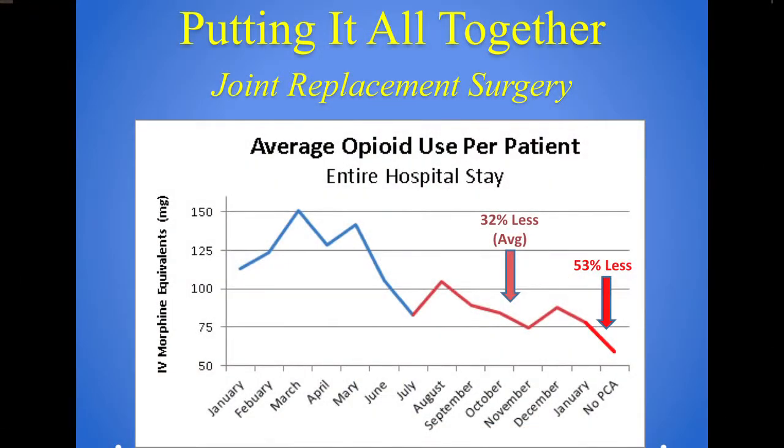We started increasing multimodal medications, and this graph shows how much extra Tylenol we began using. The average opioid use for hip and knee replacements was about 125 to 150 milligrams of morphine during the hospital stay. As we introduced the protocol, it dropped by a third. By the end we no longer used intrathecal morphine or the PCA pump — we give multimodal medications, and patients can ask for a pain pill if they're sore. We found that patients weren't pressing the button anymore, and we were down to around 50 milligrams of morphine for a two to three day hospital stay.